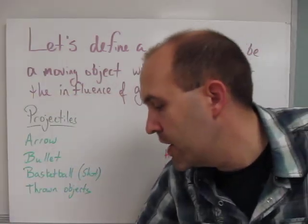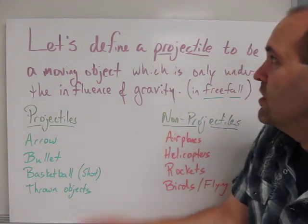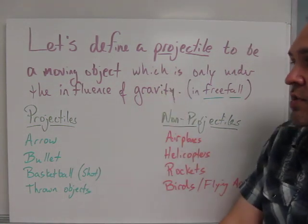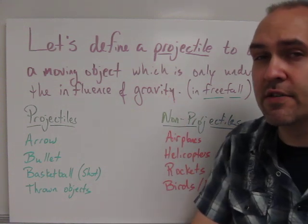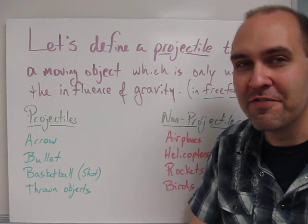Some cool labs we'll do along the way as well. Let's define what a projectile is in this class. For us, a projectile is a moving object which is only under the influence of gravity. In other words, that object is in free fall. Remember how we define free fall as something moving only under the influence of gravity?